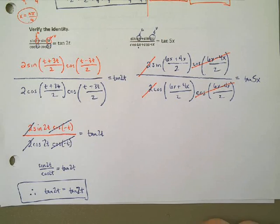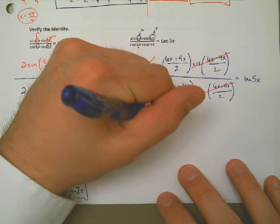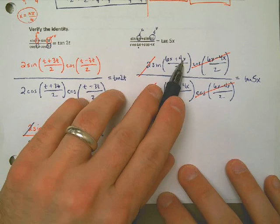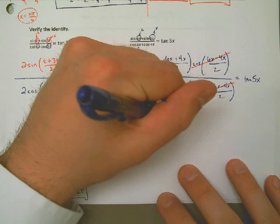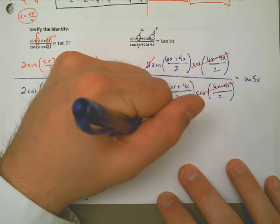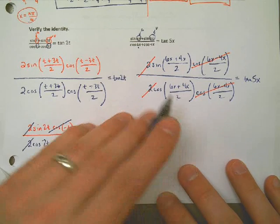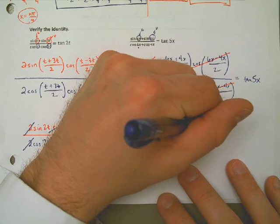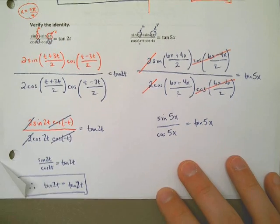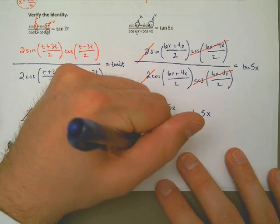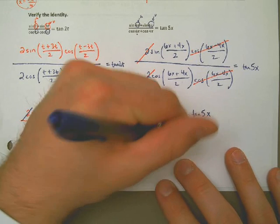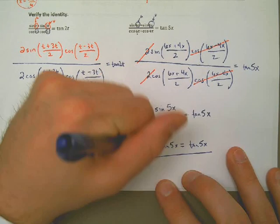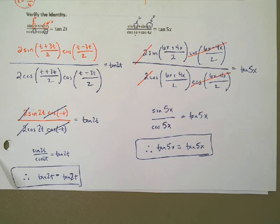And I'm left with sine of 10x over 2, which is 5x, cosine of 10x over 2, which is 5x. That is equal to tangent of 5x. That's correct. Sine over cosine is tangent. Therefore, tangent of 5x equals tangent of 5x. Circle your answer. Verification is done.